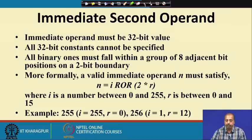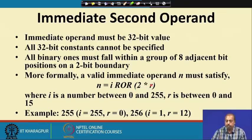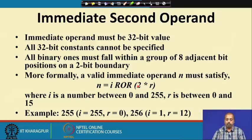i is between 0 and 255, and r is between 0 and 15. So the rotation can be from 0 bits up to 30 bits. If r equals 0, no rotation; r equal to 1 means rotation by 2 bits; r equal to 2 means rotation by 4 bits. You can see that the shift is always by even boundaries, so the number cannot be placed at odd boundaries.